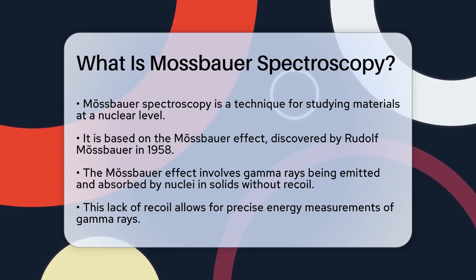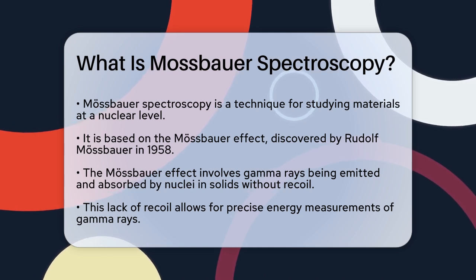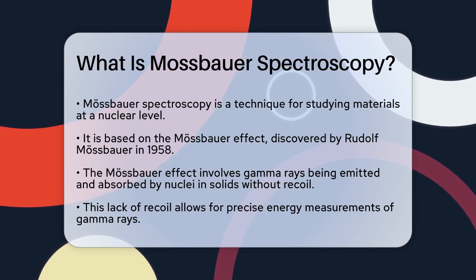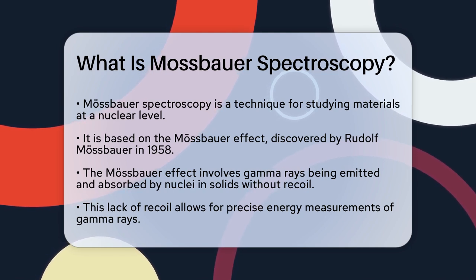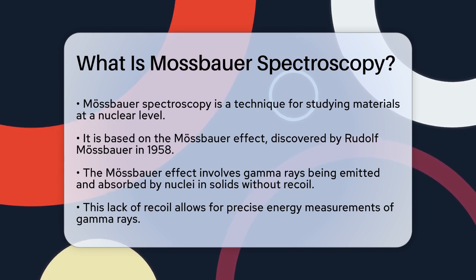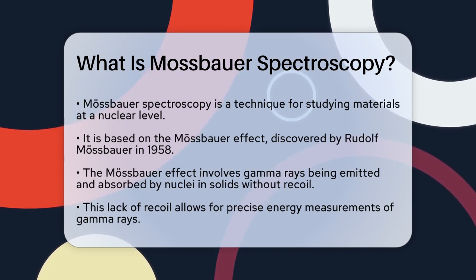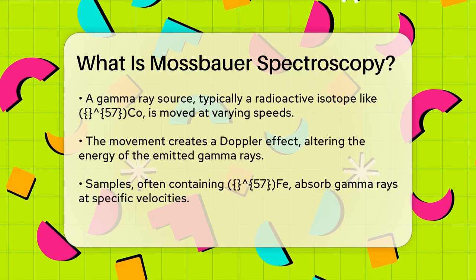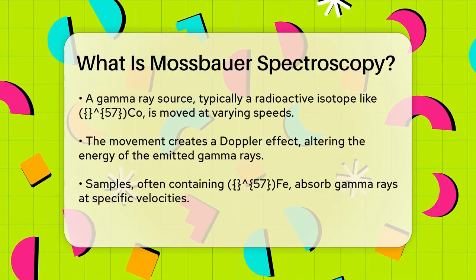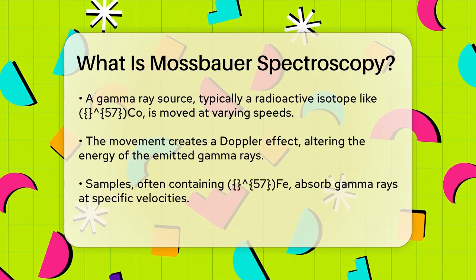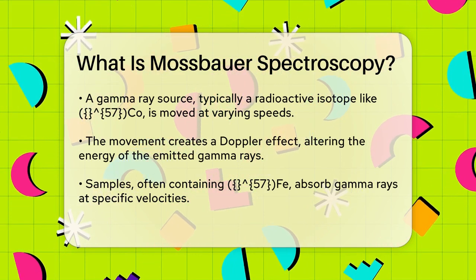The Mössbauer effect involves the emission and absorption of gamma rays by nuclei in solids without any recoil, meaning the nucleus doesn't move when it emits or absorbs the gamma ray. Here's how it works: when a nucleus emits a gamma ray, it usually recoils, which changes the energy of the gamma ray. But in solids, this recoil can be avoided, allowing the gamma ray to be emitted and absorbed with precise energy. This precision is key to Mössbauer spectroscopy.